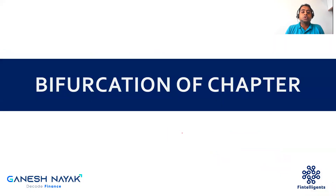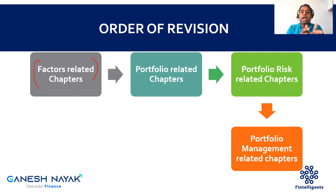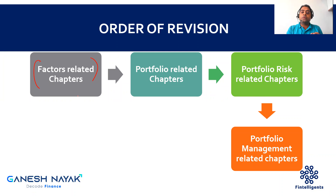Let us start with the bifurcation of chapters. The investment management book primarily starts with some factor-related concepts. The first bucket includes the factor-related chapters — factor theory and factors. The book covers portfolio management logic, first explaining what exactly a factor is and how when you hold an asset you are actually holding a factor. For example, if you hold a bond, you are holding interest rate risk.